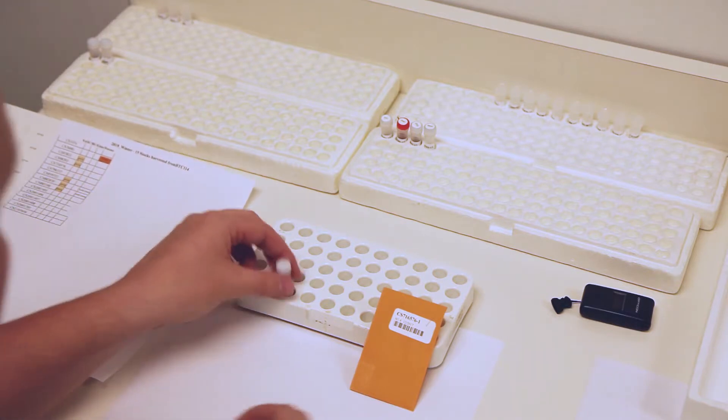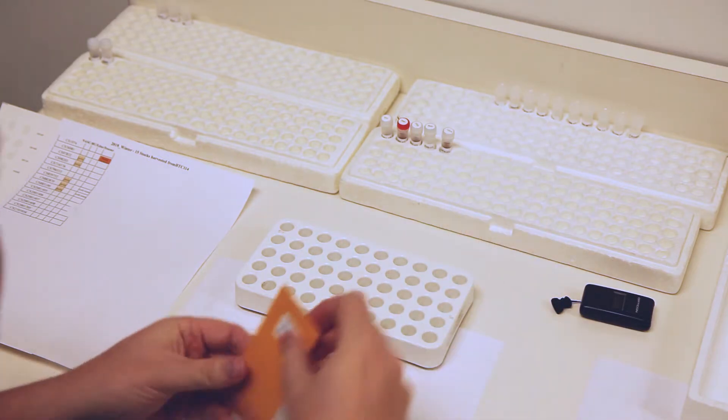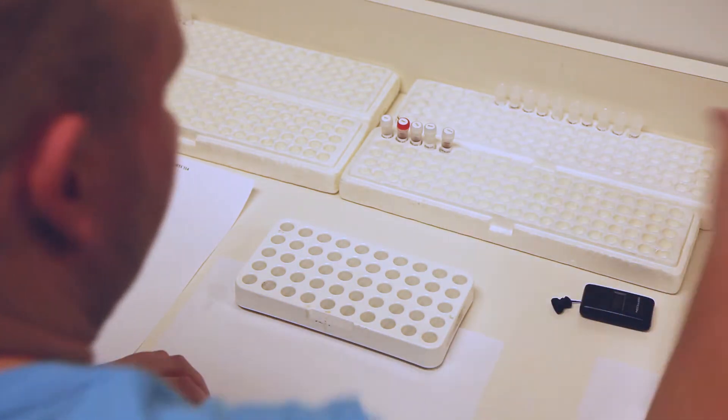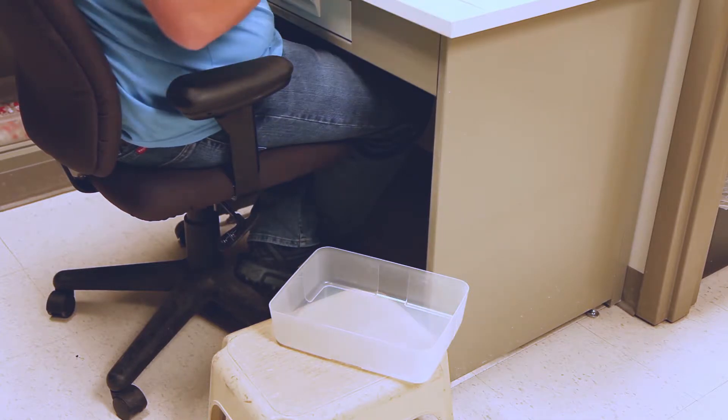After capping the vial, place a label on the lid and move the vial to a tray. Clean the work area to remove stray seeds.